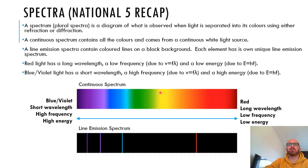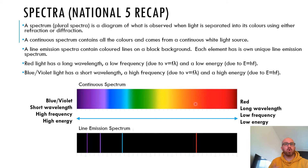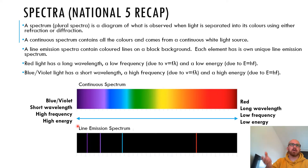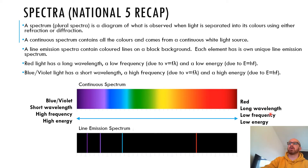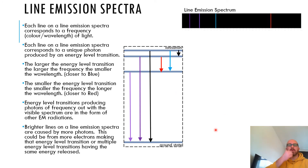A way to remember which end is which: think about a Bunsen burner. You get a yellow flame and a blue flame. The blue flame is hotter, so it has more energy — it's down near the blue-violet end. More energy means more frequency via E = HF, and more frequency means less wavelength via v = fλ. The yellow flame is towards the red end and has less energy, longer wavelength, lower frequency and lower energy. Each line on a line emission spectrum corresponds to a frequency — which is a colour or wavelength of light.